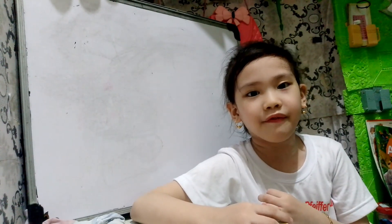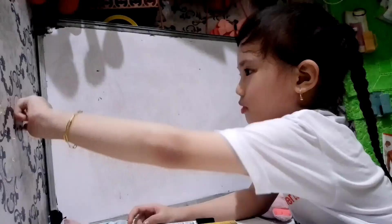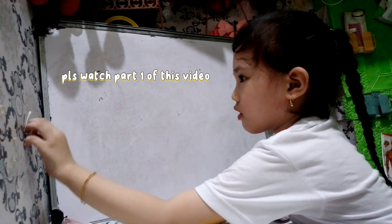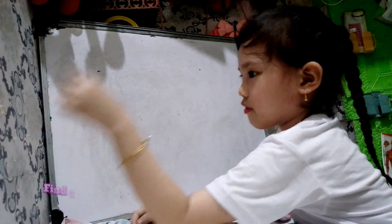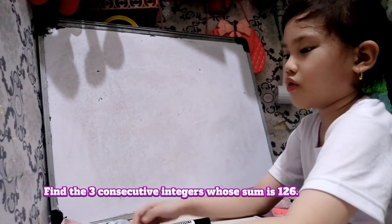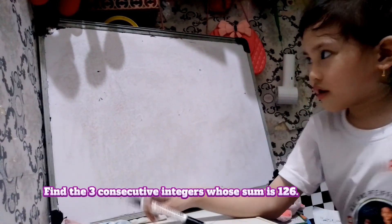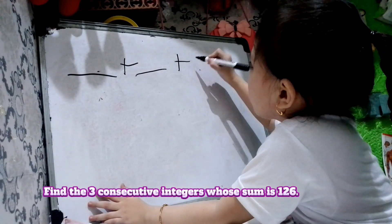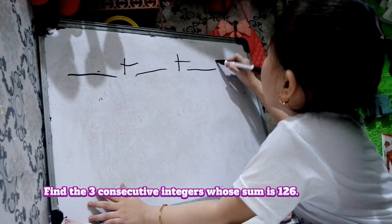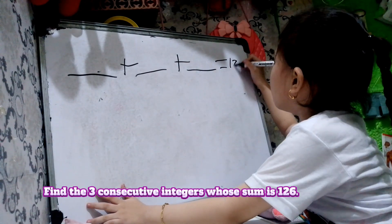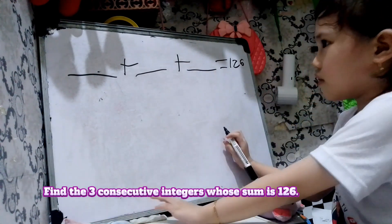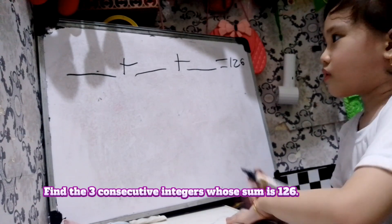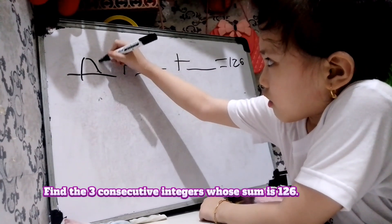Our whole activity for today is Solving Consecutive Numbers. Let's start! Find the three consecutive integers or numbers whose sum is 126. So now you have three consecutive numbers whose sum is 126.